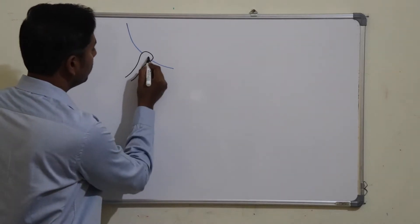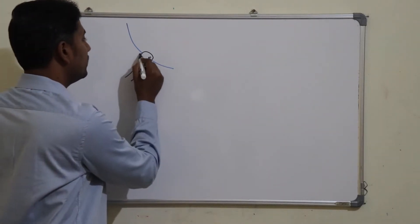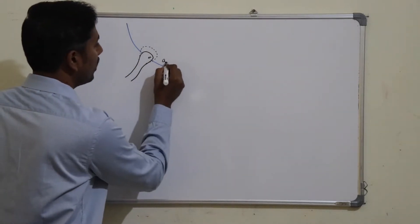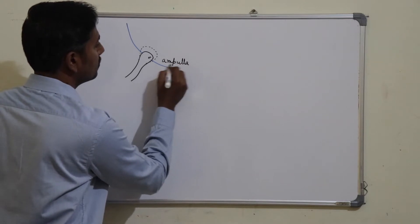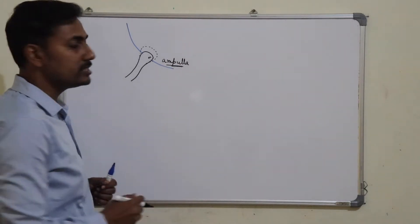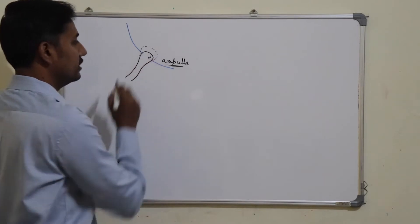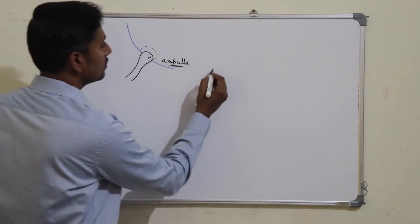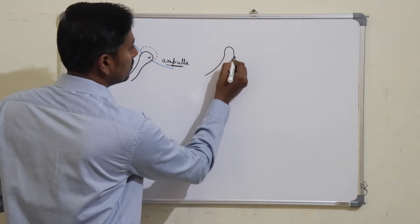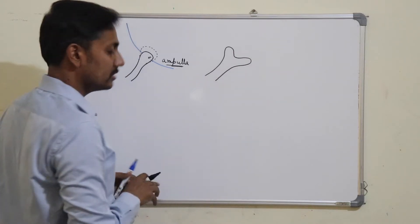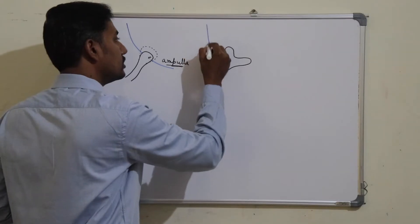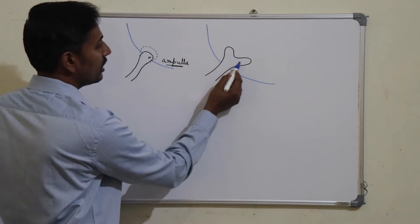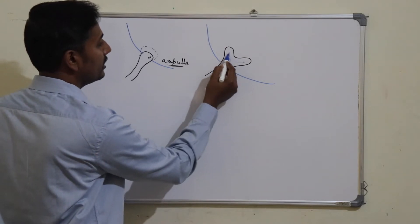The growing end of the ureteric bud becomes dilated to form what is known as the ampulla. This ampulla, or the growing end of the ureteric bud, now starts dividing or branching. You can see the ampulla has got divided into two branches.